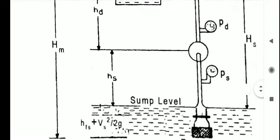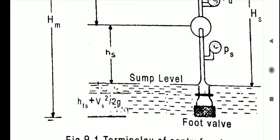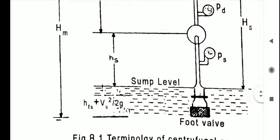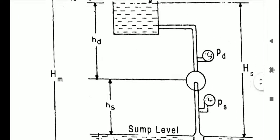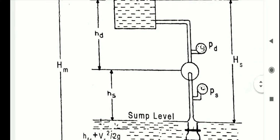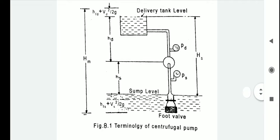The third one is static head, denoted by caps HS. It is the vertical distance between the liquid level in the sump and the delivery tank. It is denoted by caps HS. Therefore, the static head caps HS equals small hs plus HD.